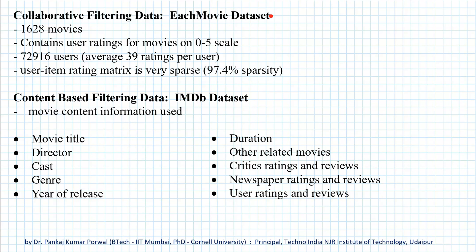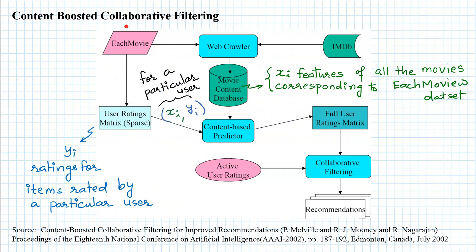With these two datasets, we first extract content information from the IMDB dataset corresponding to each movie in the EachMovie dataset, and create a movie content dataset. This has the feature information of all movies corresponding to the EachMovie dataset, and we denote the feature vector for the i-th movie as X_i.